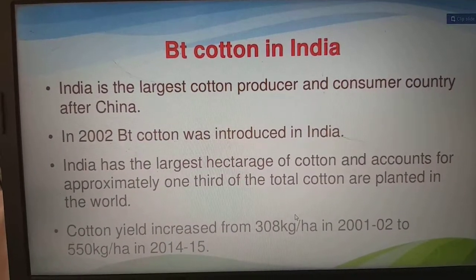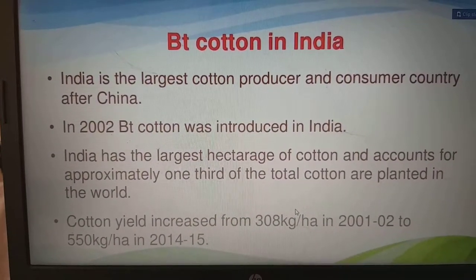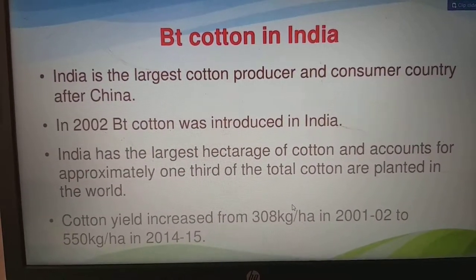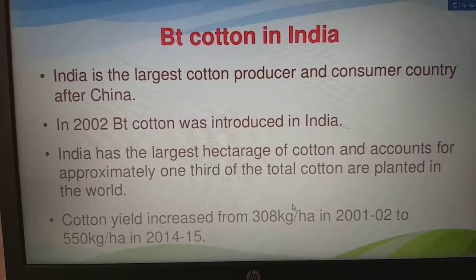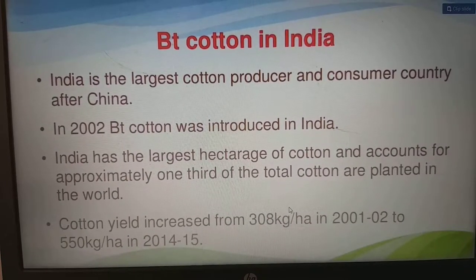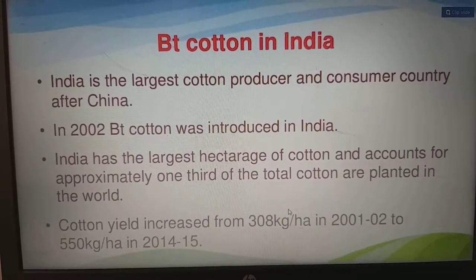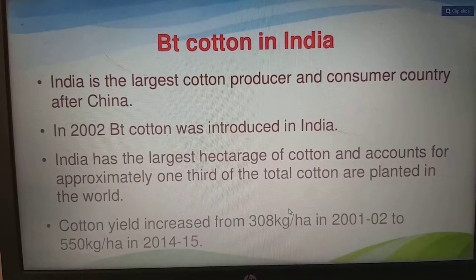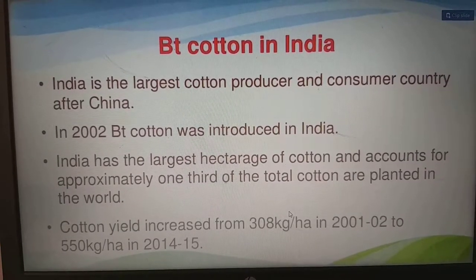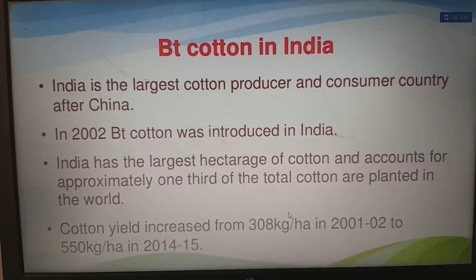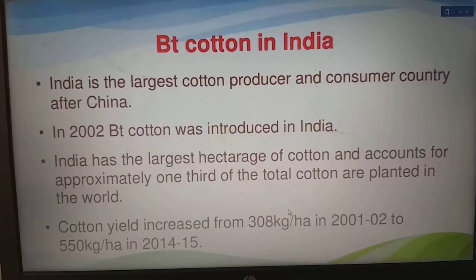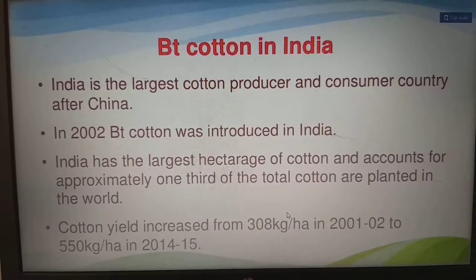Bt cotton in India: India is the largest cotton producer and consumer country after China. In 2002, Bt cotton was introduced in India. India has the largest hectares of cotton, accounting for approximately one-third of total cotton planted in the world. Cotton yields increased from 308 kg per hectare in 2001-2002 to 550 kg per hectare in 2014-2015, showing a significant yield increase.